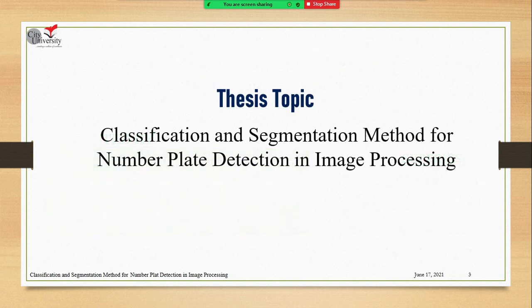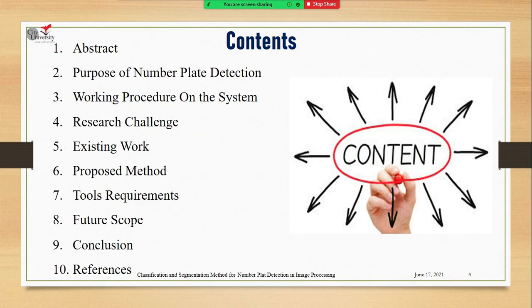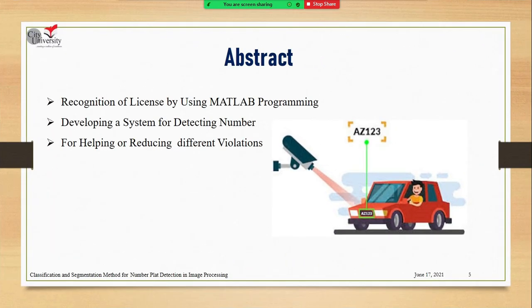Moving forward, our thesis topic is 'Classification and Segmentation Method for Number Plate Detection in Image Processing.' I will be introducing the content. As you know, I have another partner, so we divided the full presentation into two parts. The first part — which I will discuss — covers the abstract, purpose of number plate detection, and working procedure. The second part covers research challenges, existing work, proposed method, tools, requirements, features, scope, calculations, and references, which my partner will discuss later.